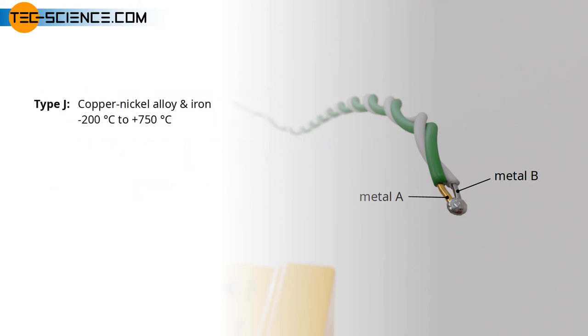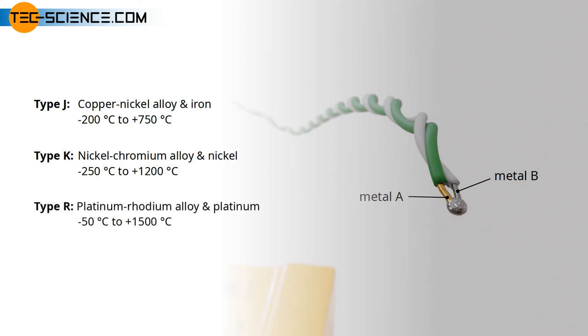Type J: copper nickel alloy and iron. Can be used from approximately minus 200 degrees Celsius to 750 degrees Celsius. Type K: nickel chromium alloy and nickel. Can be used from approximately minus 250 degrees Celsius to 1200 degrees Celsius. Type K is the most common type in private use.